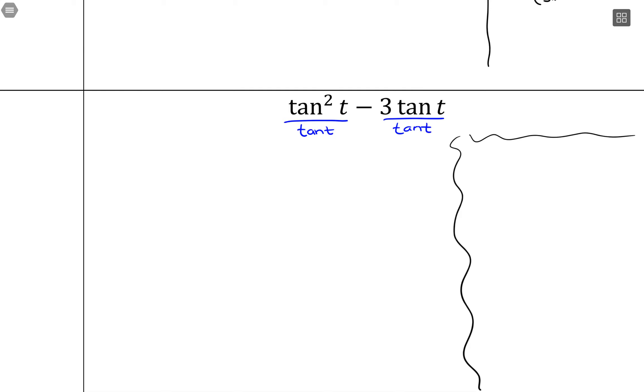So tangent of t will come out front. And inside of the parentheses, what I'll have is I'll still have one tangent left over minus 3 and those tangents cancelled out. And that would be all done.